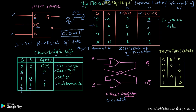In the next case, the initial state Qt was zero, and after the clock transition it changed to one. We know this is the case of set equals one and reset equals zero. From our characteristic table, when set is one and reset is zero, the state of the flip-flop changes from zero to one.